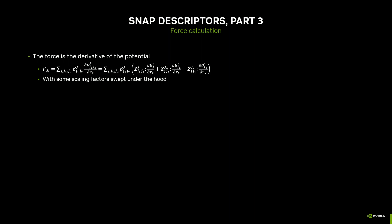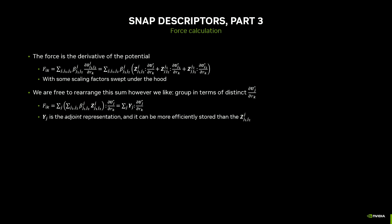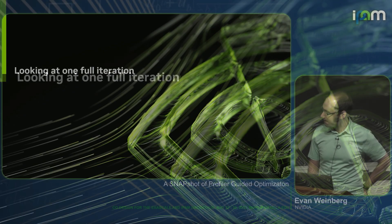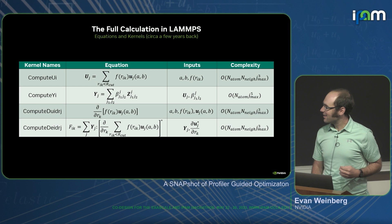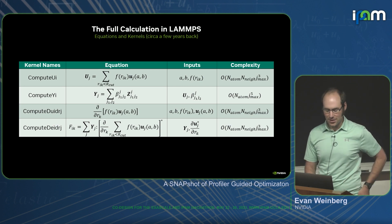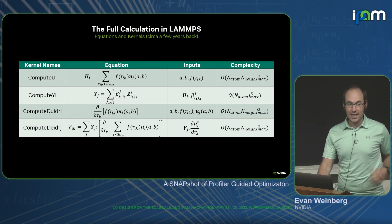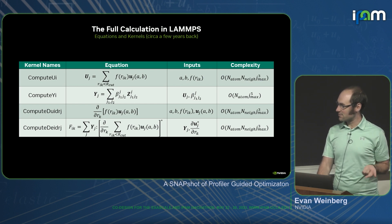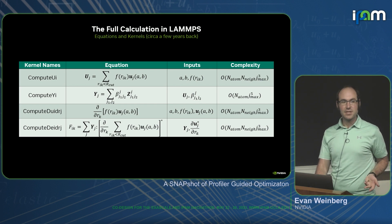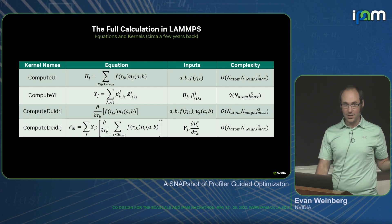Back to reality: you also want to compute a force because that tells you how atoms move. We take a derivative of a really complex expression using the product rule and rearrange it. At the end of the day, there are four key kernels: computing Wigner matrices, computing group theory quantities, computing derivatives of them, and assembling them all together into forces. One of these kernels is what we'll focus on today.